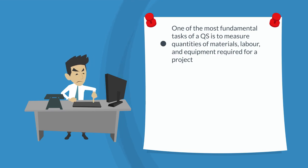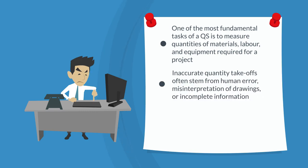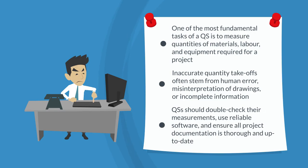Mistakes in this process can lead to significant cost discrepancies. Inaccurate quantity takeoffs often stem from human error, misinterpretation of drawings or incomplete information. To avoid this, QSs should double-check their measurements, use reliable software and ensure all project documentation is thorough and up-to-date.